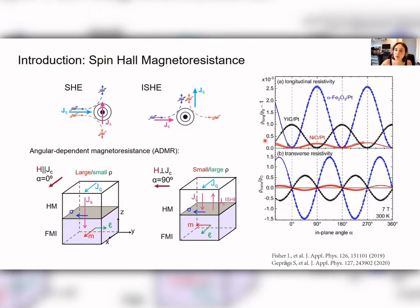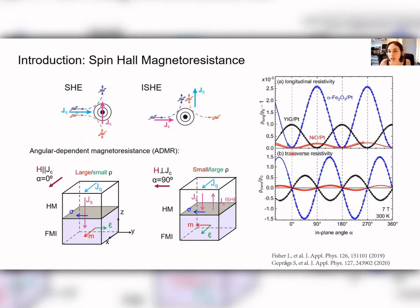This has been proven by several experiments — for example with the ferromagnet YIG at the interface with platinum — where a sinusoidal modulation of the longitudinal and transverse resistivity is observed. If the experiment is repeated with an antiferromagnet such as alpha iron oxide or nickel oxide, the modulation has the opposite sign relative to YIG, and in the transverse configuration there is also a sinusoidal modulation with a 45-degree phase shift.